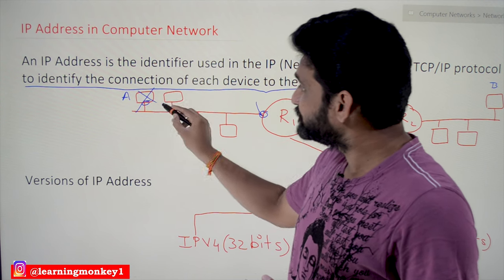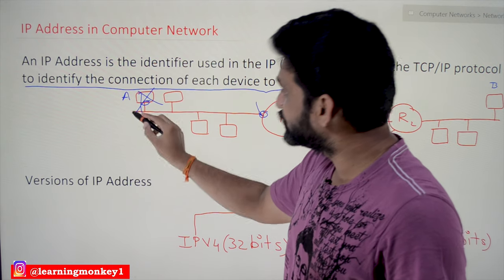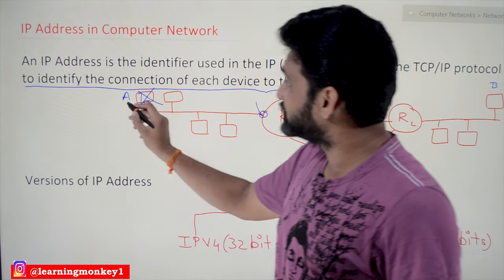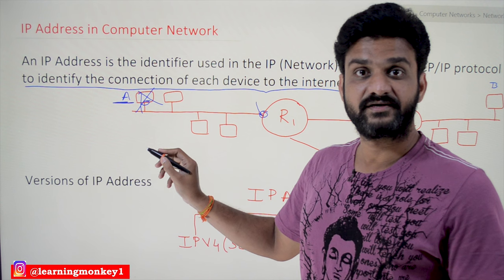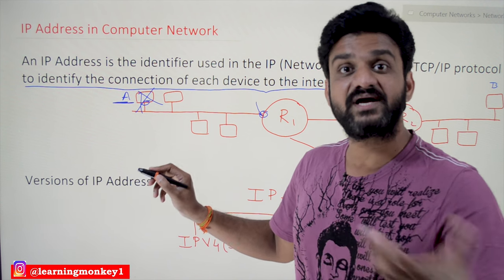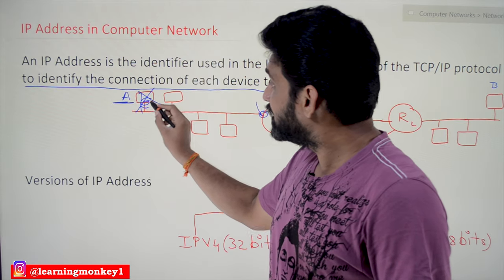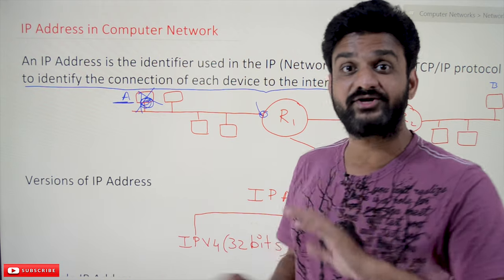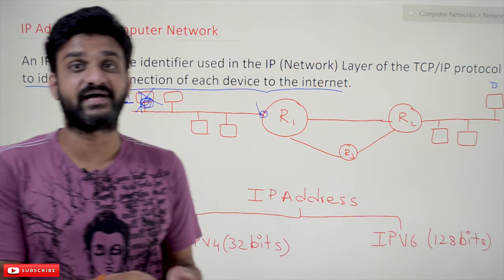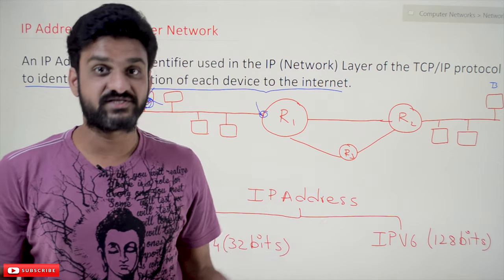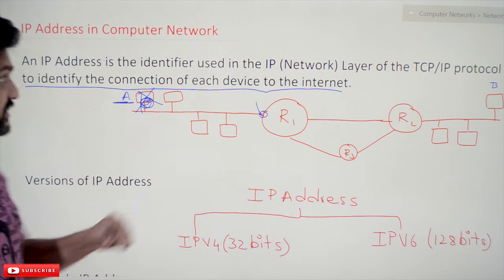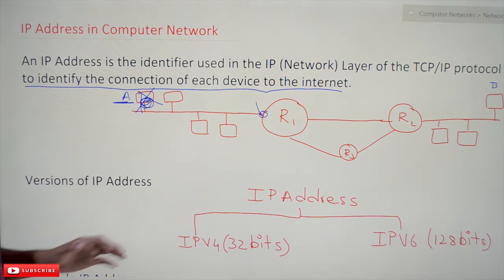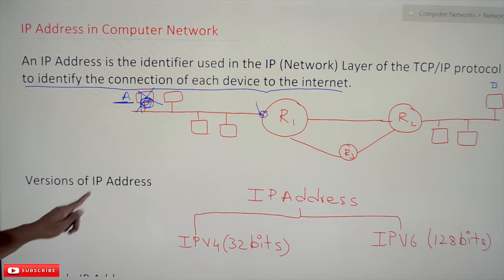For example, if an address is assigned here and you remove this system and bring a new system and connect it at the same point, even then the new system will have the same address A. It is the identification of the connecting point, not the computer. I am stressing this because most of the time we assume that IP addresses are for computers — no, they are for the connecting point which makes our device connect to the internet.